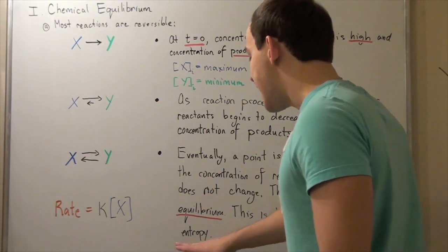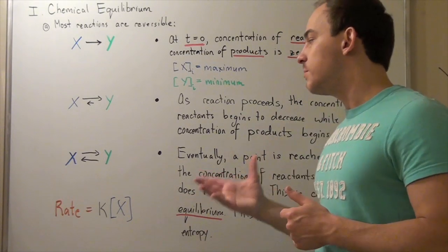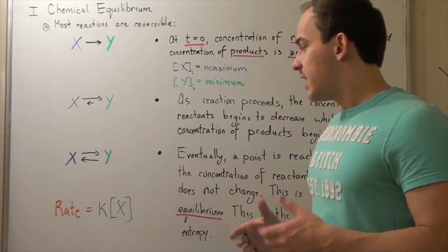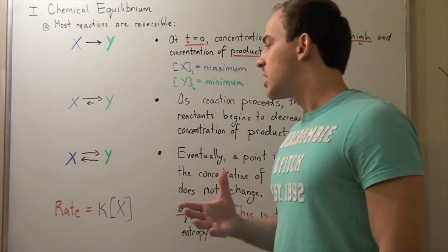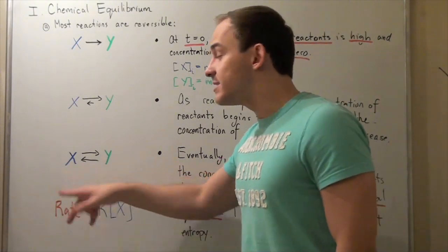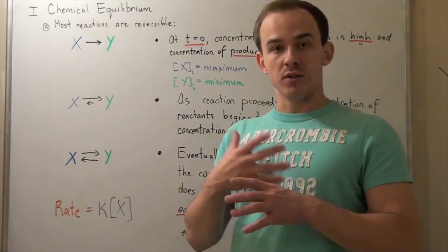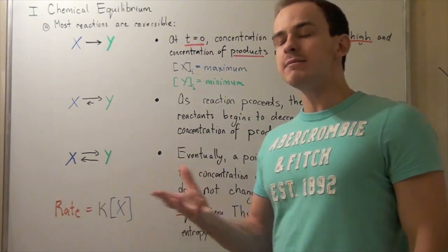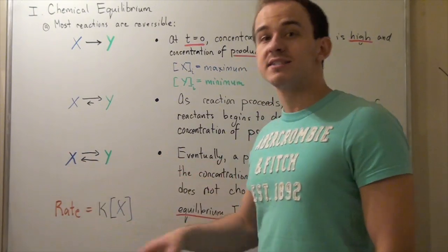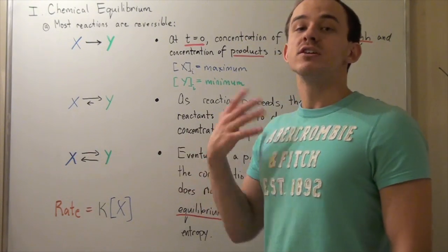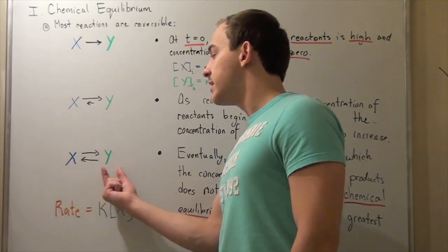It's important to understand that entropy at this point is at its highest, because entropy defines the most probable state, and equilibrium is the most probable state. At this point, it is dynamic equilibrium — the reactions are still occurring. X is still being converted to Y, and Y is still being converted to X. It's just that because the two rates are equal, the concentrations remain the same. Even though it might seem like the reactions have stopped, forward and backward reactions are still occurring at the same rate — and that's exactly why the concentrations remain constant.